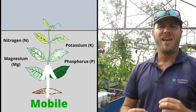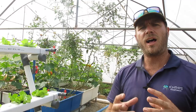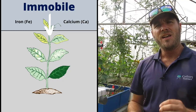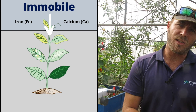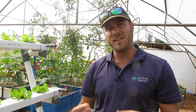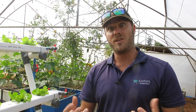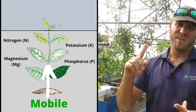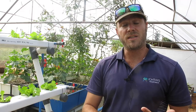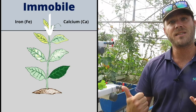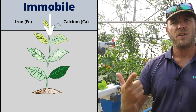If a nutrient is mobile, the deficiency will first be seen in the older leaves, and the newer leaves are unlikely to show a deficiency until later. For immobile nutrients, deficiencies show up on the new leaves first, then later in the old leaves. My main mobile nutrients are nitrogen, phosphorus, potassium, and magnesium. My main immobile nutrients are calcium and iron. If you can remember those, you're off to a really good start.